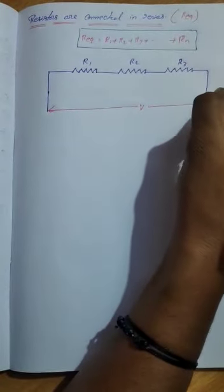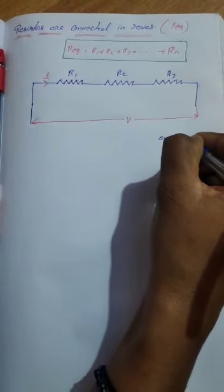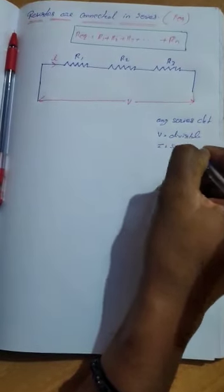See, what happens whenever we give voltage to this circuit? Current I is flowing throughout the circuit. Before calculating these kinds of circuits, we should know one thing: in any series circuit, voltage is divisible and current is the same.